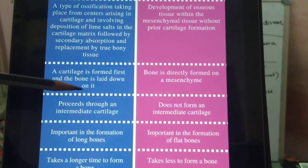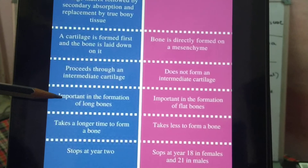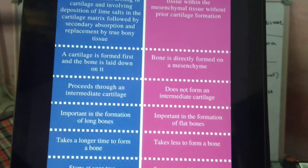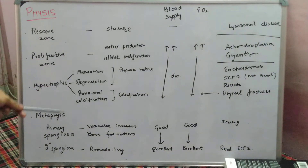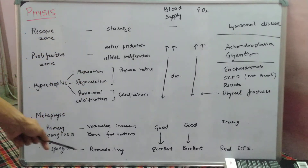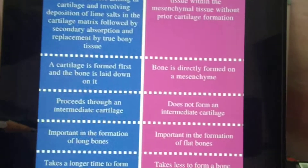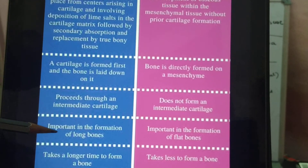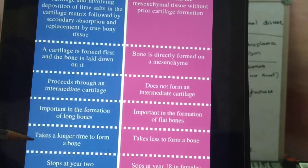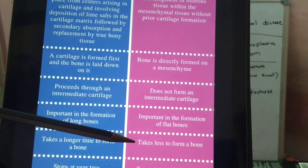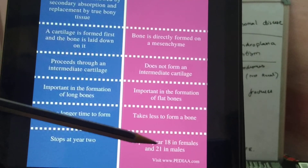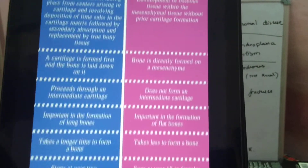Endochondral ossification proceeds through an intermediate cartilage stage and is important in the formation of long bones, where growth occurs. Intramembranous ossification involves no cartilage and is important in the formation of flat bones. Endochondral ossification usually takes longer to form bone and stops at age 18 to 21 years depending on sex, whereas intramembranous ossification takes less time and stops at around age two years.